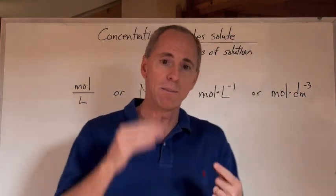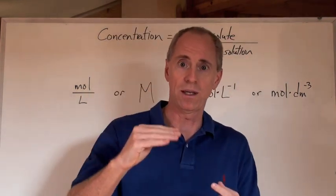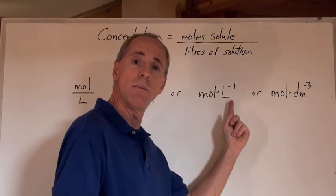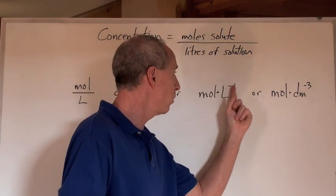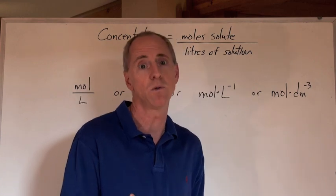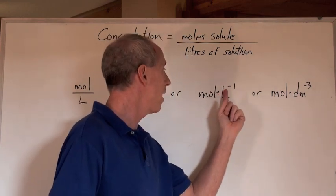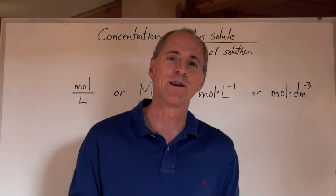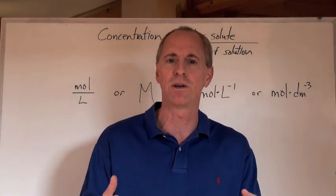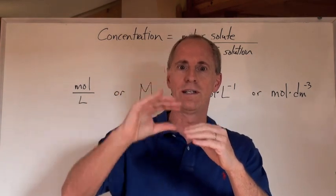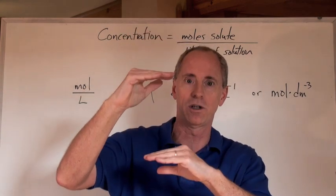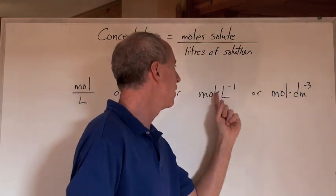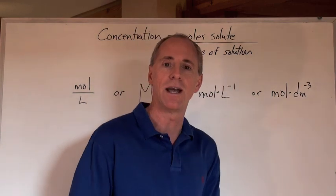Another way of writing 'per something' is to put that thing in the denominator back into the numerator with a negative exponent — a negative one exponent. So moles times liters to the negative one is a way that some people write that, if you're writing a textbook and you don't want to occupy an extra line of space — you write it all on one line with the liters to the negative one.